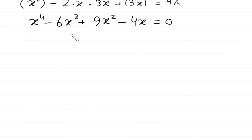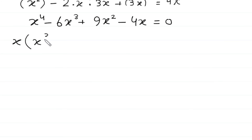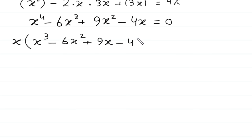Next, you can see that x is common in the whole expression, so we factor out x. x times, in brackets: x cubed minus 6x squared plus 9x minus 4, is equal to 0.